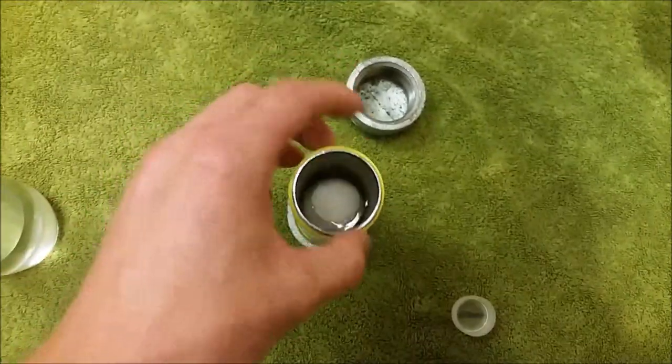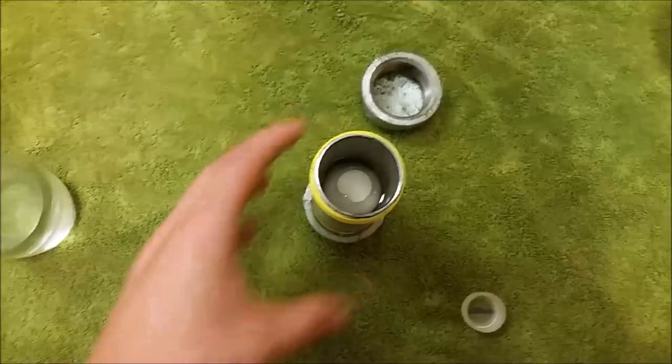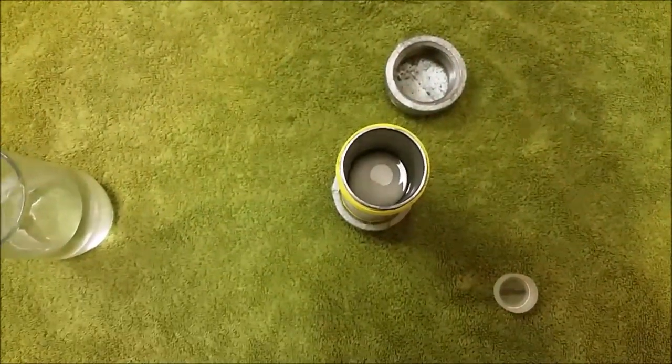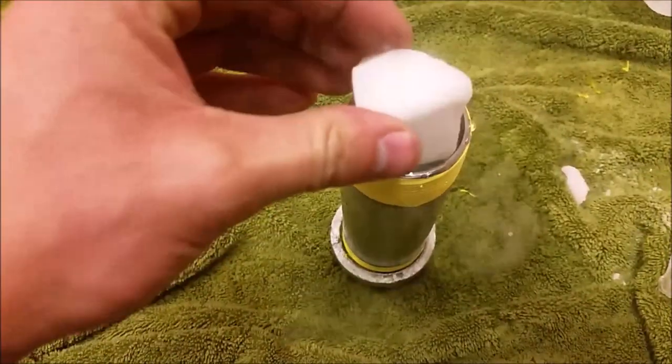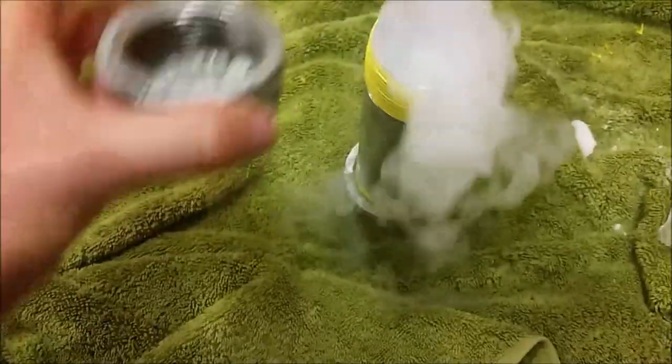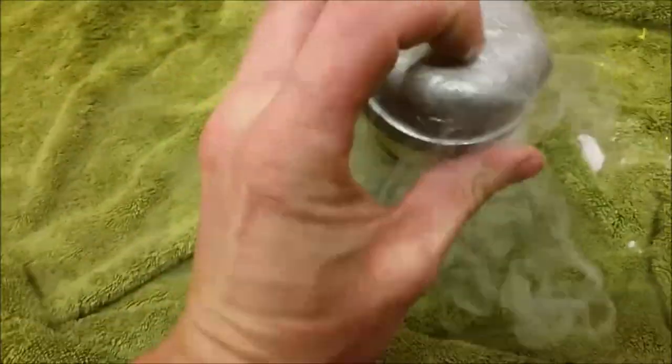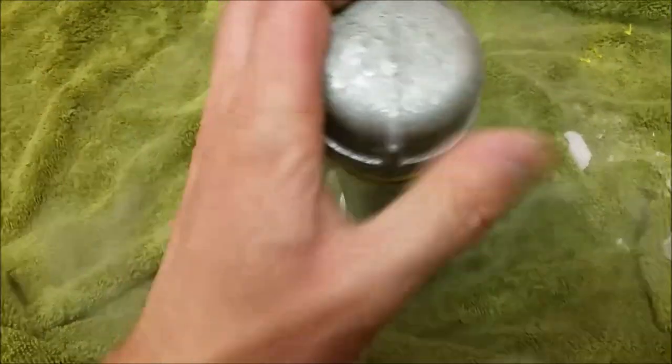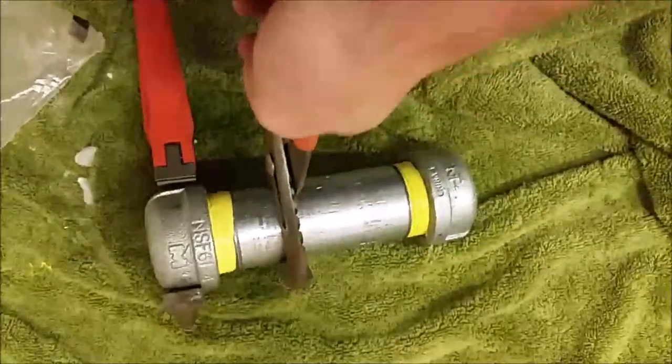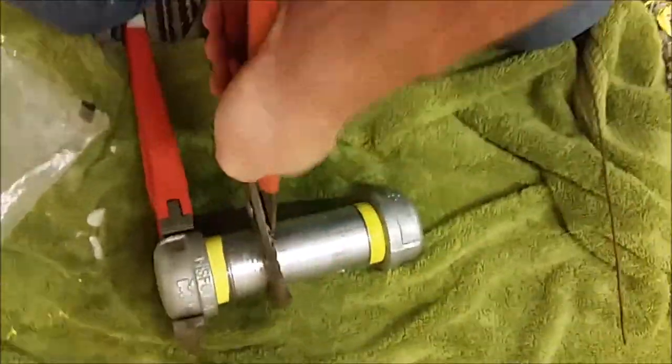This isn't going to be particularly interesting until I add some frozen CO2, as you can see here. This will increase the pressure inside the vessel and the CO2 will react with water forming carbonic acid. So let's go ahead and seal this up and let her sit for a while and see what it does to the egg.